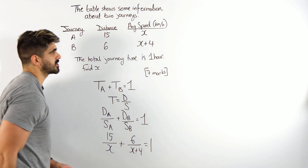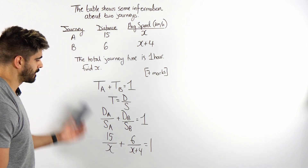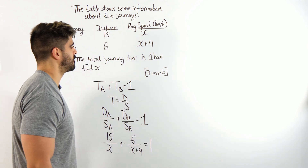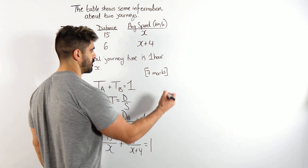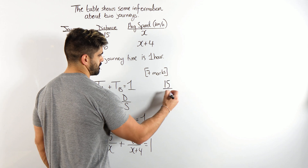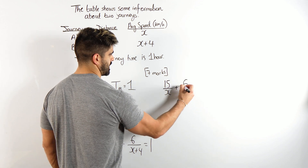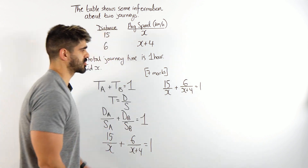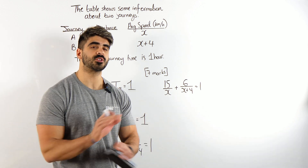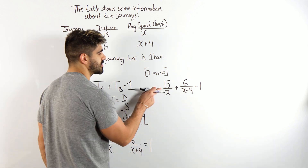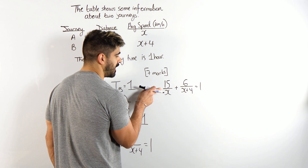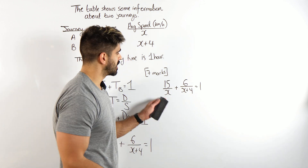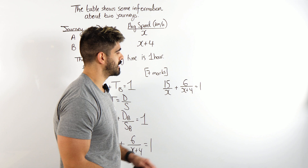What is this question about? It is about algebraic fractions — we can fit algebraic fractions everywhere. So how do we solve it? We have 15 over x plus 6 over (x plus 4) equals 1. Now to solve algebraic fractions, you always want to get rid of the denominators. The denominator means divided by x, and this means divided by x plus 4. So we're going to do the opposite — multiply by x and multiply by x plus 4.